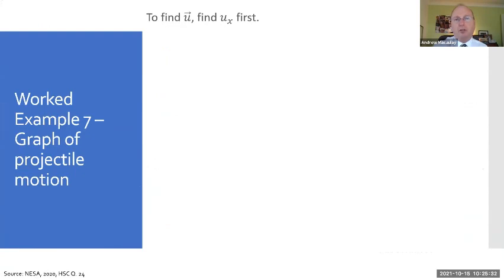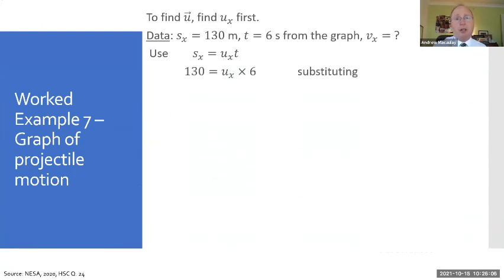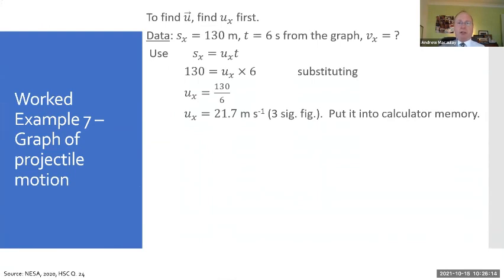The question is to calculate the initial velocity of the projectile. So to find the initial velocity, and we're going to call that u with an arrow above it, so it's a vector, we need to find ux first. So the horizontal component of the initial velocity. Here's the data. Sx, we're told in the question, is 130 meters. The time is six seconds from the graph, and the velocity in the x direction is what we need to find. So we use Sx = uxt. Remember, we need to learn that one. And substitute 130 = ux × 6. Dividing by six, we get 21.7 meters per second. Now you'll find that it's 0.6 repeater. Leave that on your calculator.